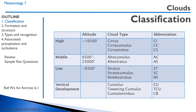Our middle clouds are between 6,500 feet and 23,000 feet. They have the prefix alto, so an altocumulus or an altostratus. Low clouds are below 6,500 feet and they are often called strato-type clouds, although stratus also means layer, so there's a bit of an overlap in the nomenclature.